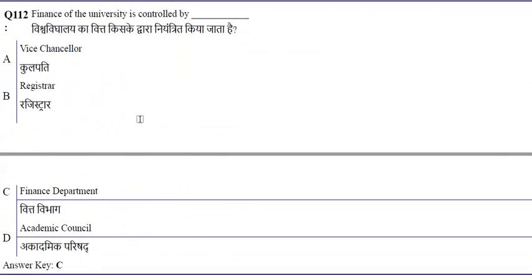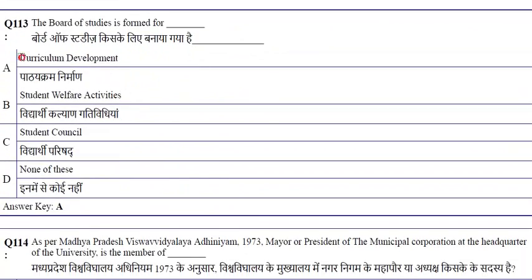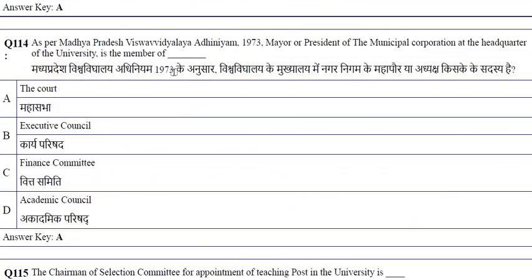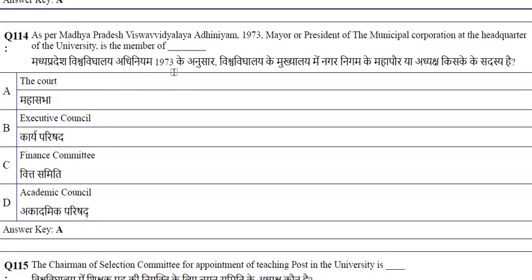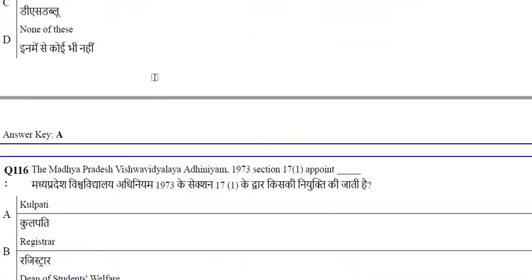The finance of the university is controlled by the registrar. The Board of Studies is formed for curriculum development. As per the MP Vishwavidyalaya Adhiniyam 1973, the Mayor or President of Municipal Corporation at the university headquarters is a member of the court. The Chairman of the Selection Committee for appointment of teaching posts is the Kulpati.